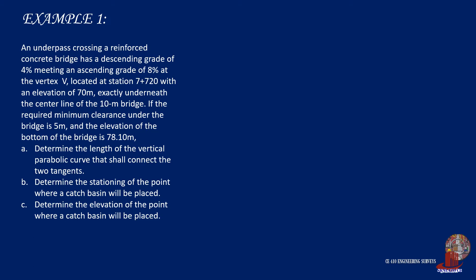a. Determine the length of the vertical parabolic curve that shall connect the two tangents, b. Determine the stationing of the point where a catch basin will be placed, and c. Determine the elevation of the point where a catch basin will be placed.